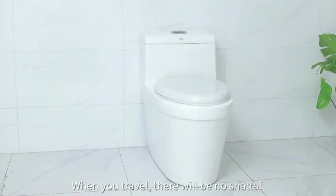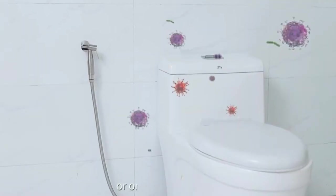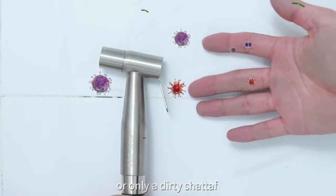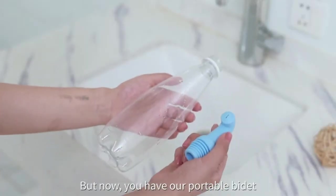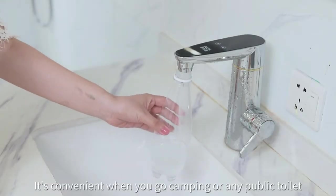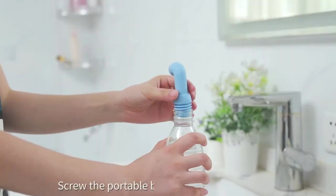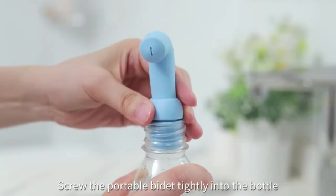Spray water to clean by squeezing the bottle. Reduce the use of toilet paper to protect forests. Light and easy to carry. Size: 3.15 in x 1.38 in x 0.71 in.